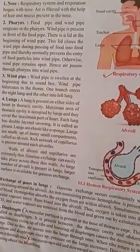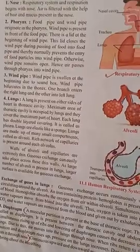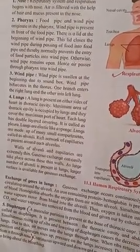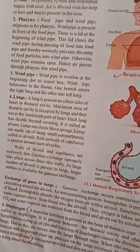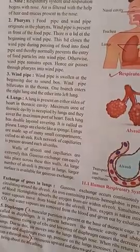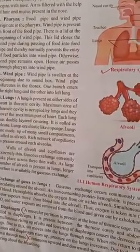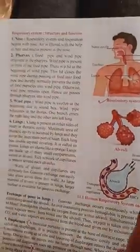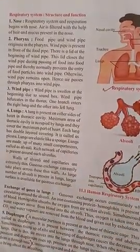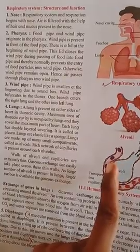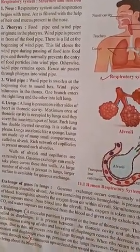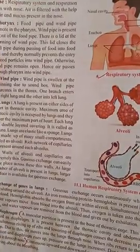The lungs are situated on either side of the heart in the thoracic cavity, and they occupy the maximum area of the thoracic cavity. Each lung has a double-layer covering for protection, and the lungs are elastic like a sponge. Lungs are made up of many small compartments called alveoli, around which a rich network of capillaries is present.